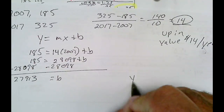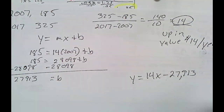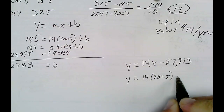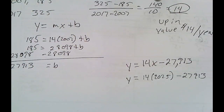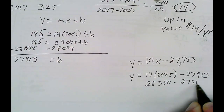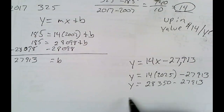Let's rewrite our equation: y is equal to 14x minus 27,913. We want to know what it's going to be worth in 2025, so x is 2025. Y is equal to 14 times 2025 minus 27,913. 14 times 2025 gives 28,350, minus 27,913, means the vase will be worth $437 in 2025.